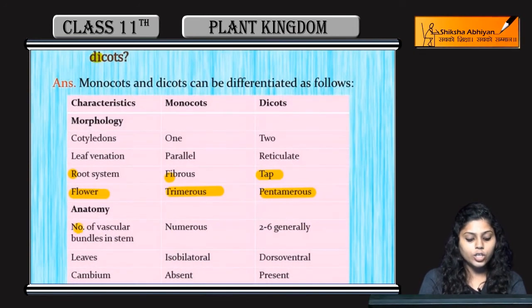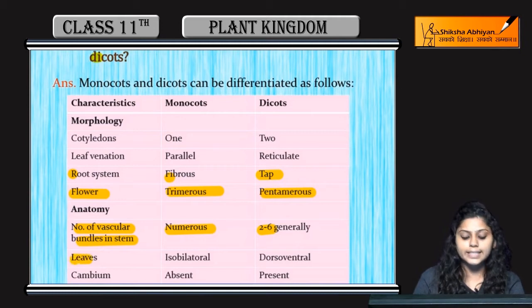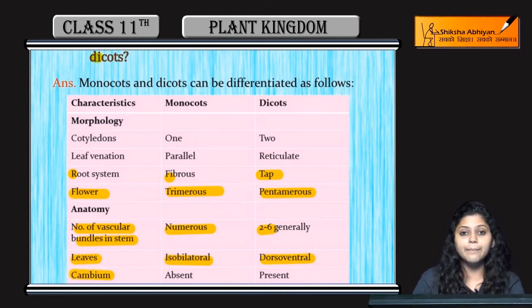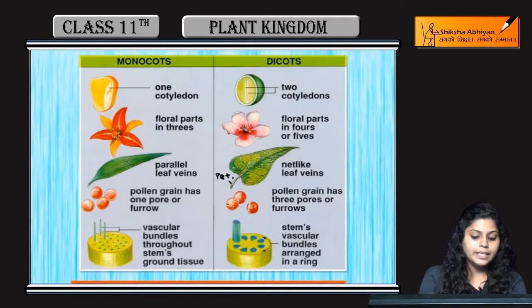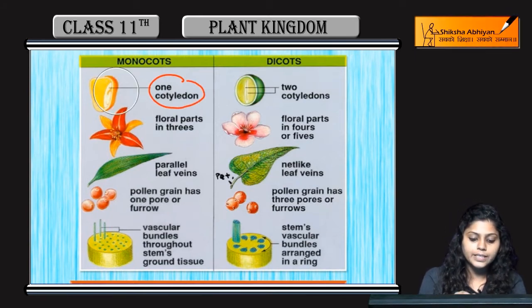Regarding anatomy, the number of vascular bundles in stems is many in monocots, whereas in dicots it is generally two to six. Leaves are isobilateral in monocots and dorsoventral in dicots. Cambium is absent in monocots and present in dicots.